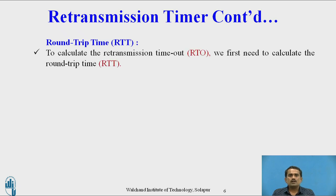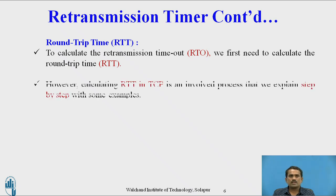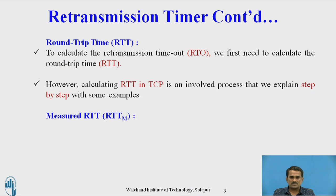To calculate the RTO, that is the retransmission timeout, we first need to calculate the RTT, which is the round trip time. However, calculating RTT in TCP is an involved process that we will explain step by step with the help of some examples in upcoming slides.